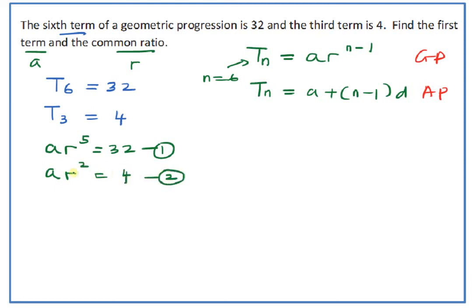We have two equations and two unknowns, A and r. To solve these equations, we divide the first equation by the second equation. So we have A·r^5 divided by A·r^2, which gives 32 divided by 4.